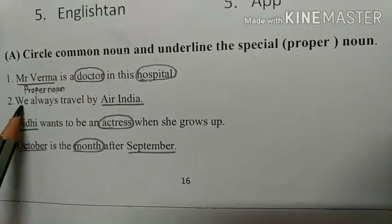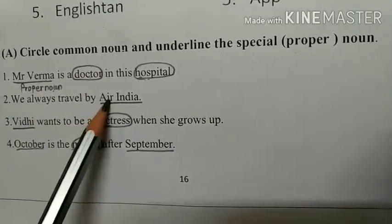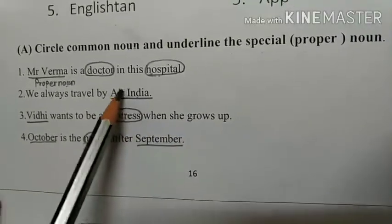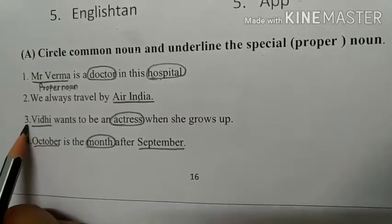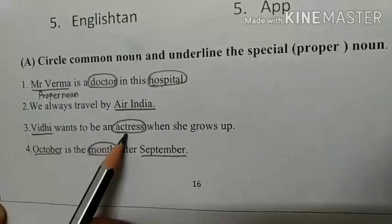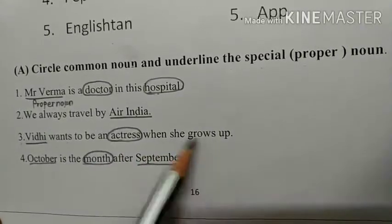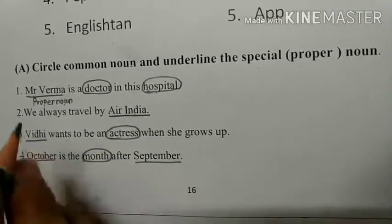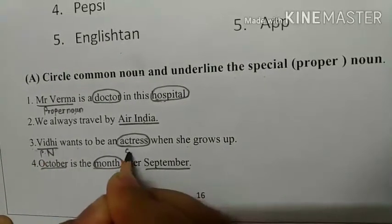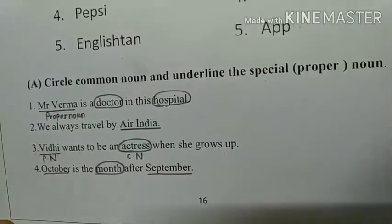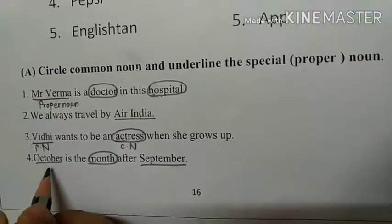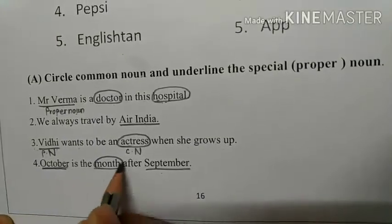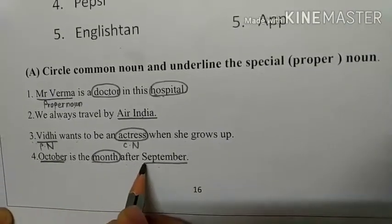Now come to the second question: 'We always travel by Air India.' Air India is a proper name, so underline Air India. Third question: 'Vidhi wants to be an actress when she grows up.' Circle actress and underline Vidhi — Vidhi is a proper noun and actress is a common noun. Fourth question: 'October is the month after September.' Underline October, circle month, and underline September.